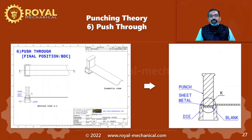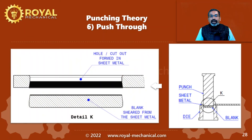The next stage is the push through stage. Let's take a closer look at detail view K. As the punch descends still further, the blank which is sheared from the raw material is pushed through the die opening. A hole or cutout is formed in the raw material.